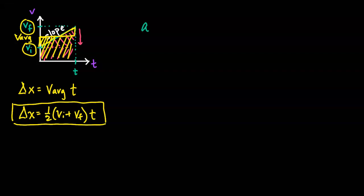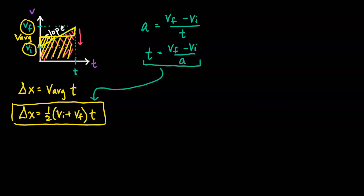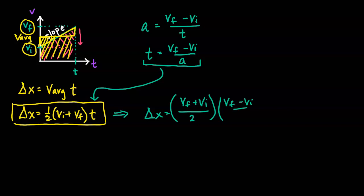For the last kinematic equation, we go back to our first kinematic equation where acceleration equals VF minus VI divided by T. Solving for T, we get T equals VF minus VI divided by A. We're going to substitute that into T, so delta X equals VI plus VF divided by two, times VF minus VI divided by A.